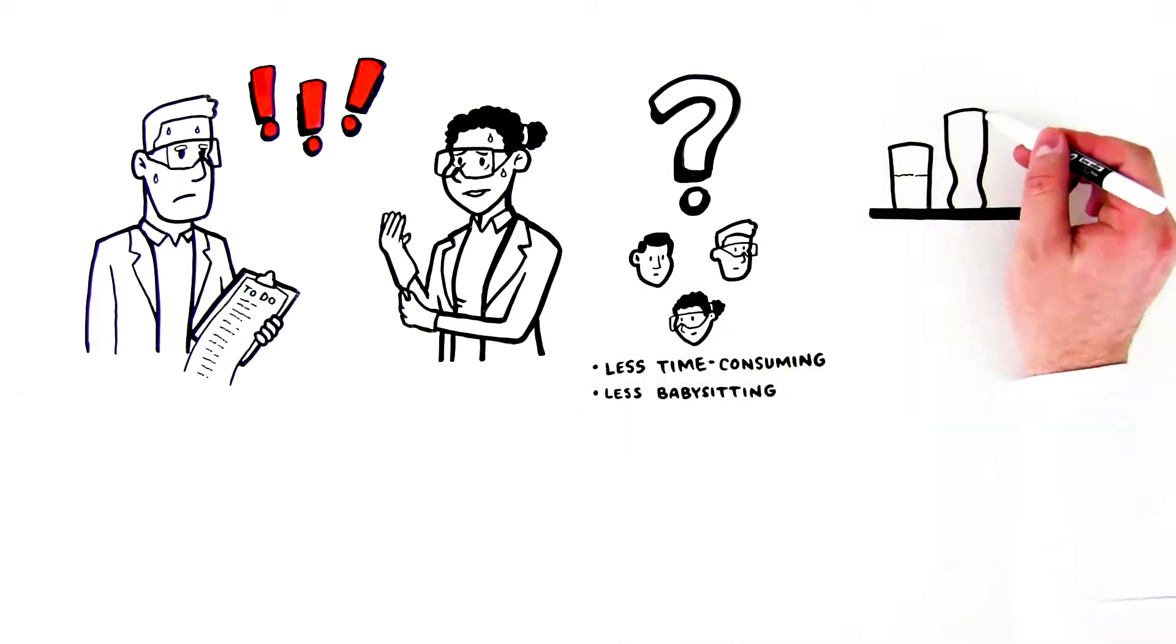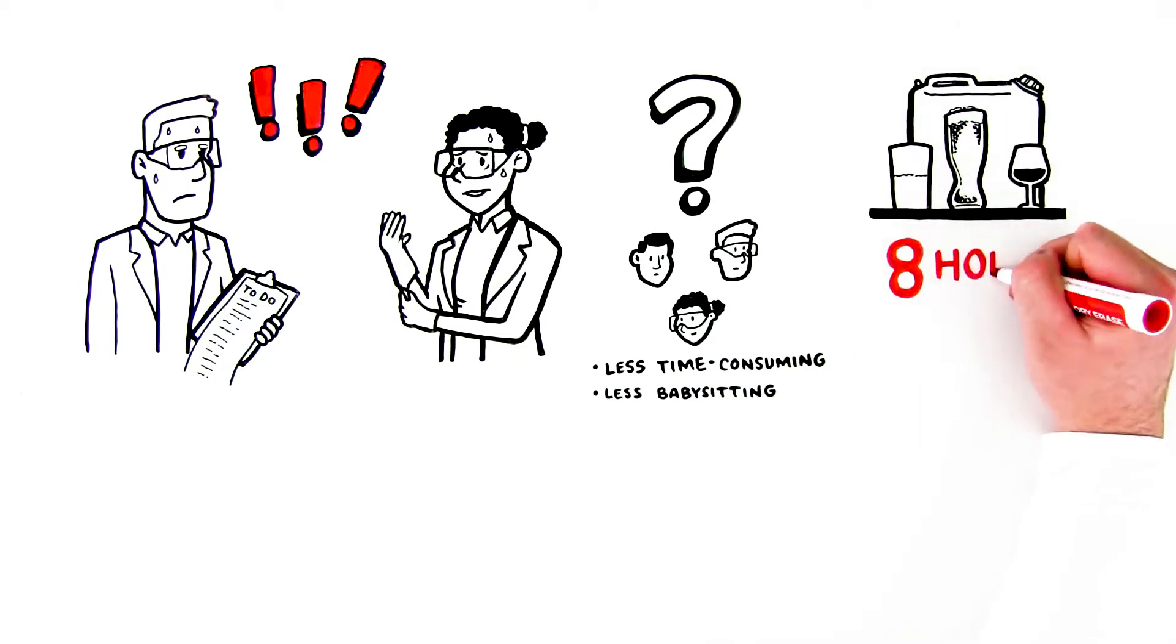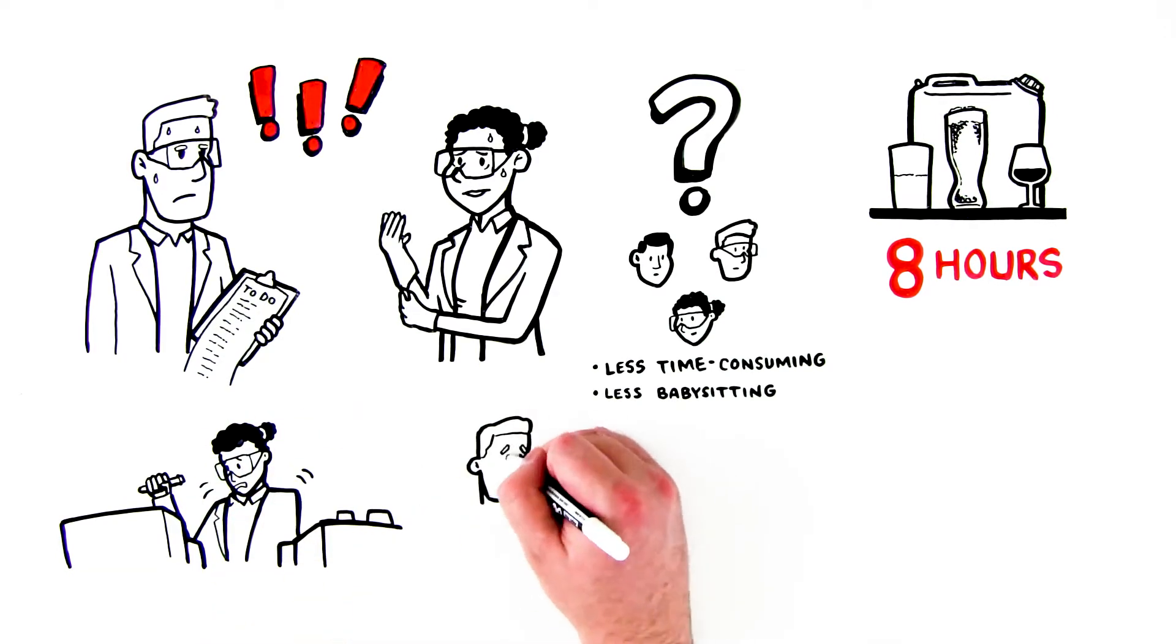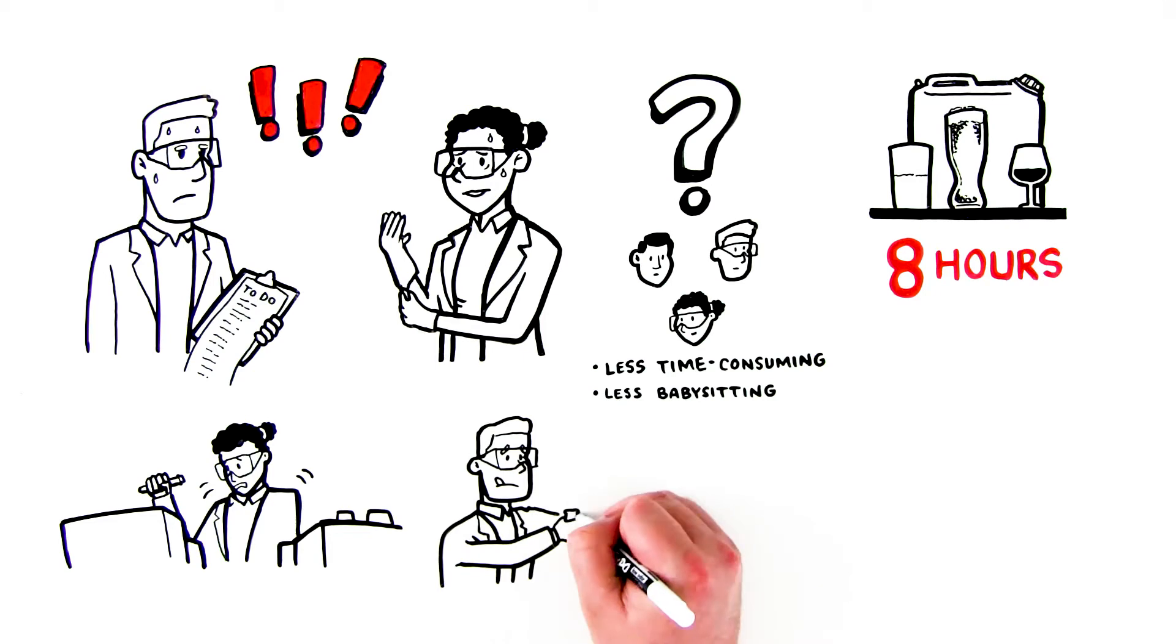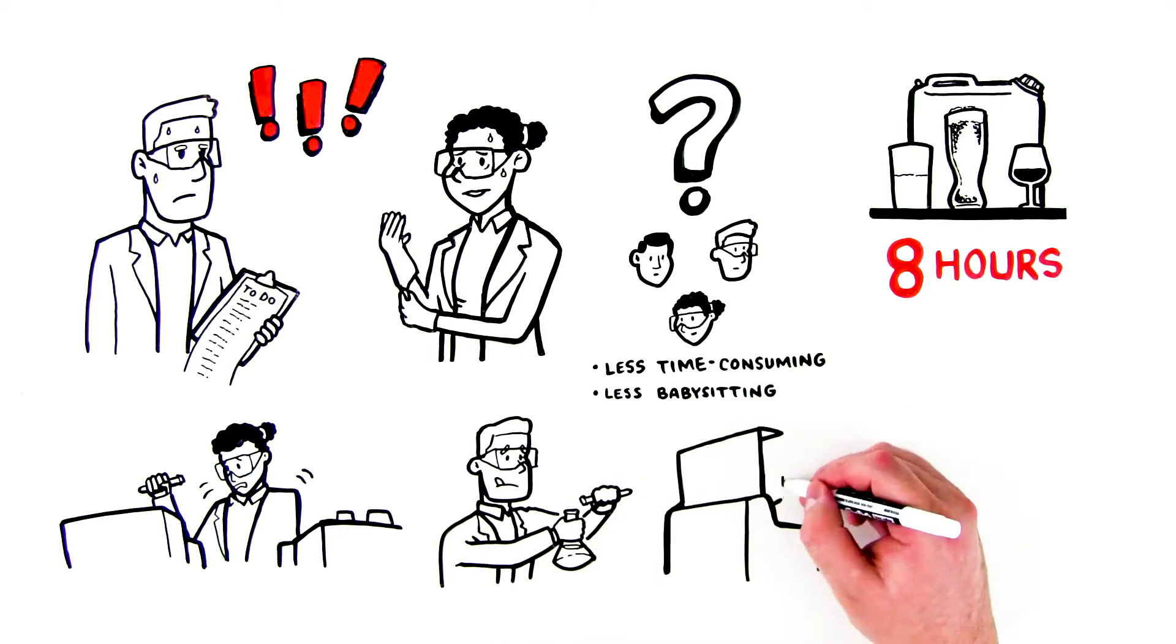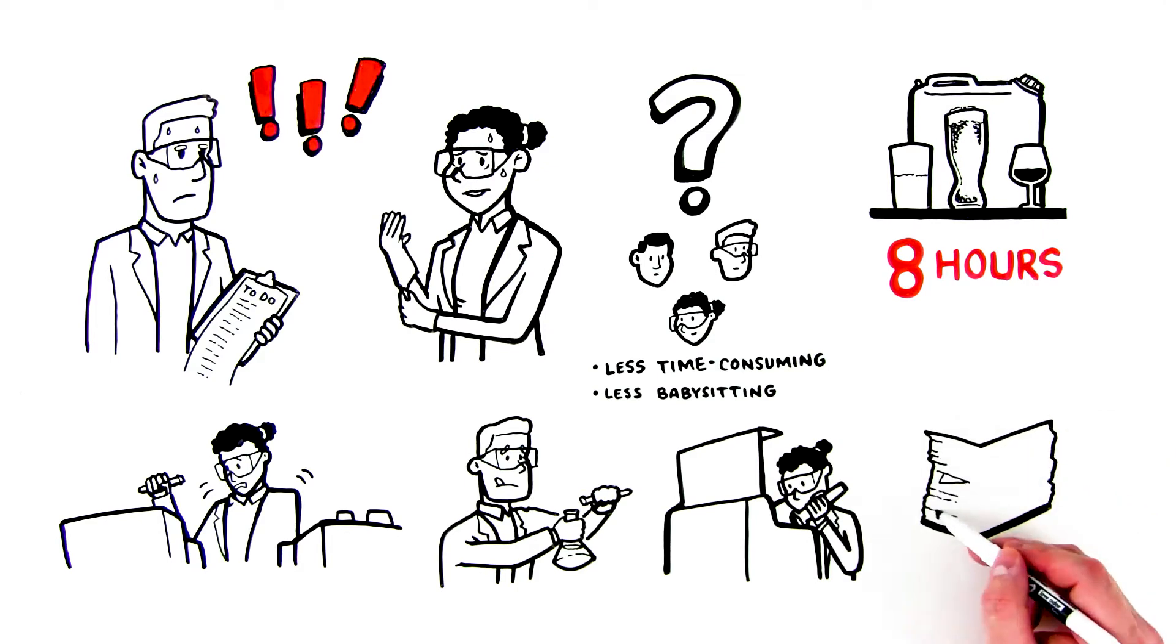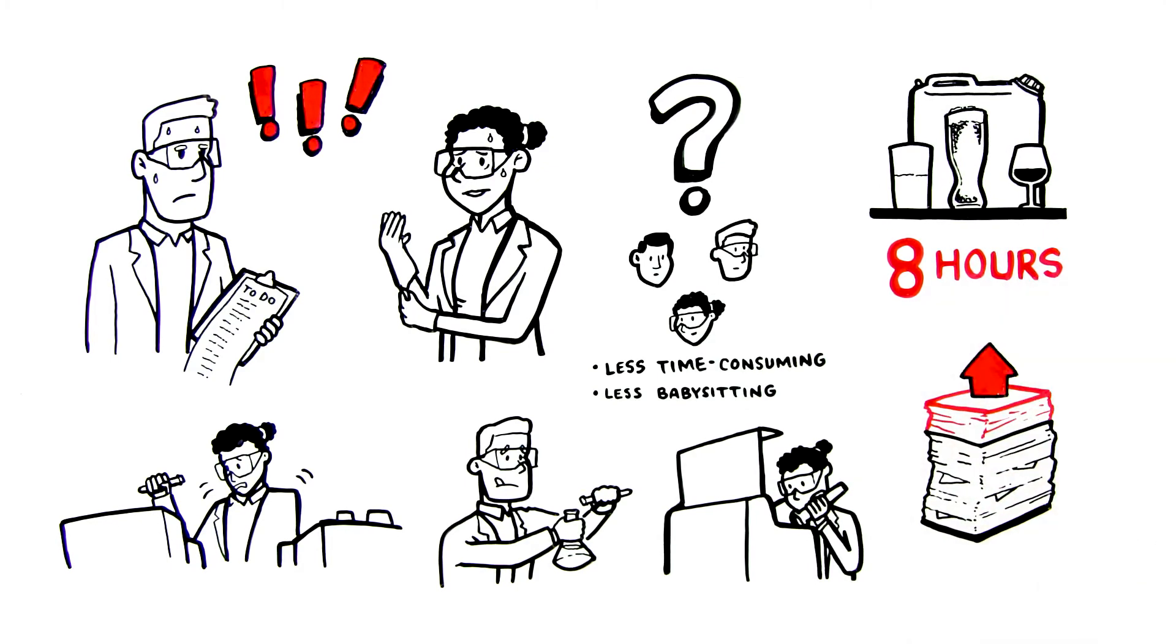With the volume of tests they're scheduled to perform today, they'll likely have to spend a full eight hours shuttling between machines, loading reagents and samples, and calibrating over and over again, for each sample and each test. Meaning nothing else will get done, and their backlog of work, already long, will continue to grow.